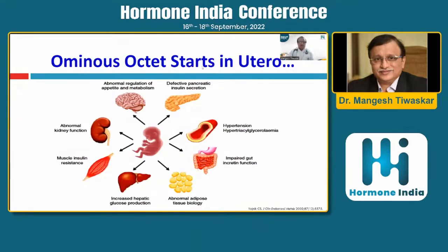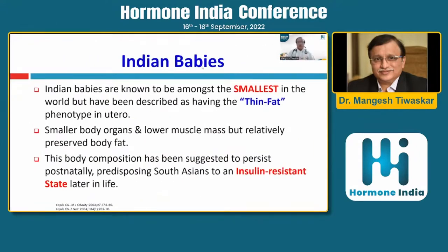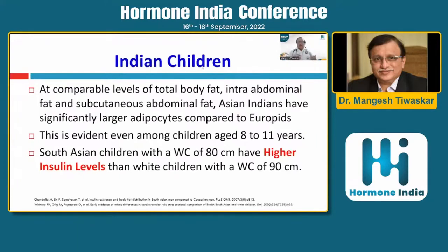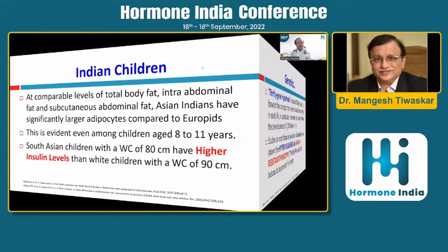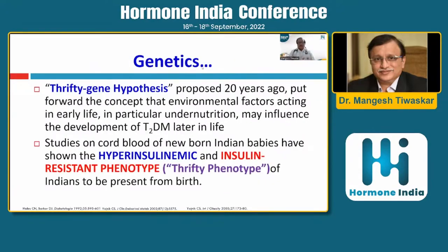We need to understand this starts right in utero as far as Indian babies are concerned. Indian babies are the smallest birth-weight babies globally, yet they have a very high amount of body fat — visceral fat and organ fat deposition. So Indian babies, right from birth, have a tendency to develop metabolic derangement or metabolic syndrome, becoming evident in the first or early second decade of life. Dr. Yajnik's publication showed that Indian babies have three times higher cord blood insulin levels compared to Caucasian babies.